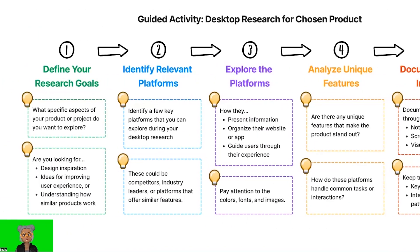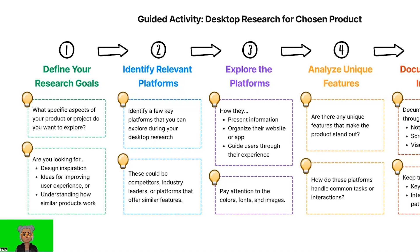Step 1: Define your research goals. Before diving into desktop research, it's important to clarify what you hope to achieve. Ask yourself and jot down on a piece of paper or on FigJam: what specific aspects of your product or project do you want to explore? Are you looking for design inspiration, ideas for improving user experience, or understanding how similar products work? By having clear research goals, you'll stay focused and make the most of your research.